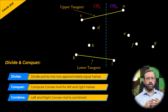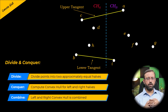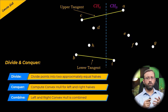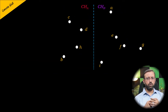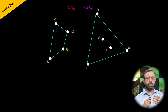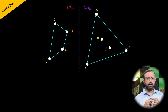The divide and the conquer phase can be easily performed, but the combine phase is a little bit tricky and somewhat complicated. So let us look at how to merge the left and the right convex hull.